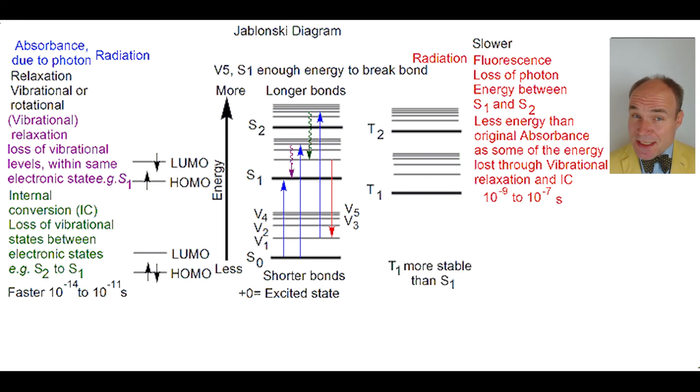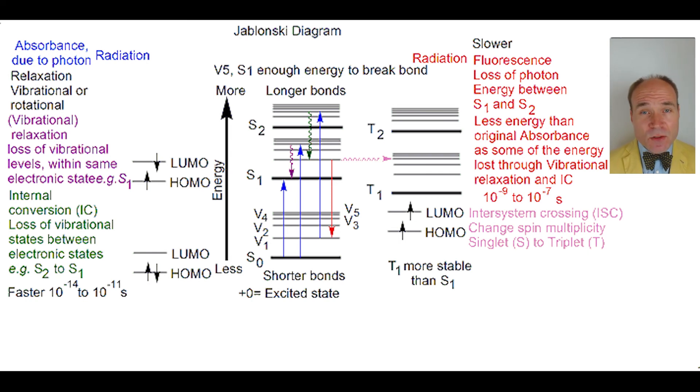The excited electronic state S1 by inter-system crossing, or ISC, can change its multiplicity from singlet to triplet state. T1 has one electron in HOMO and one electron in the original LUMO, but now these electrons have the same electron spin state. This is an even slower process than fluorescence, 10^-8 to 10^-3 seconds.